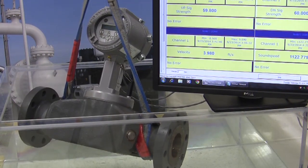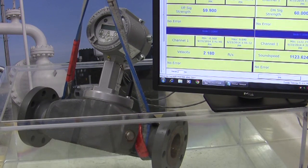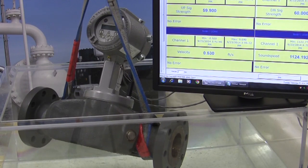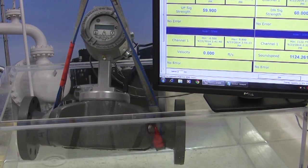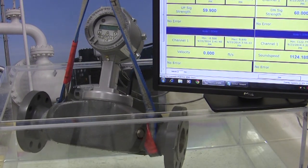You can see the meter is reading between 4 and 5 feet per second, just as it was before. Meter is working absolutely perfect, just as we expect. Our signal strength is very, very good. Our sound speed is 1124, exactly what we'd expect. We're back down to zero flow. That concludes our Z1G dunk test.